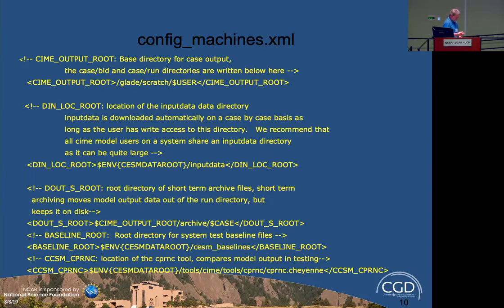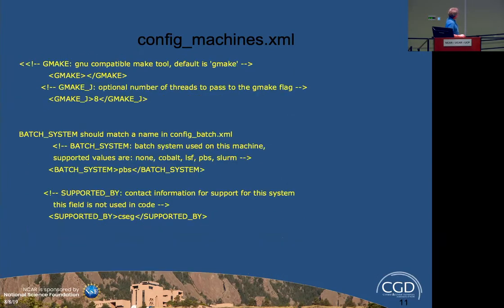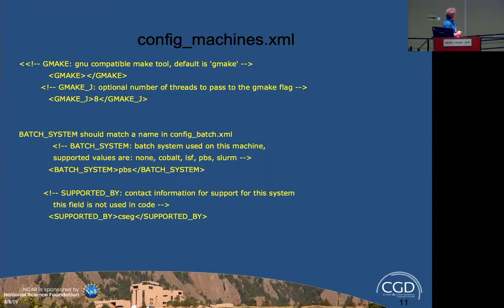Baseline root and CPPRNC are testing locations you don't need to worry about much. GNU make is usually called 'make' on most systems — about 90% of the time — but sometimes there's a system make that's not quite compatible with GNU make, and then there's gmake which is compatible, so you'd put 'gmake' in there. For batch systems, we support Cobalt, LSF, PBS, and SLURM.